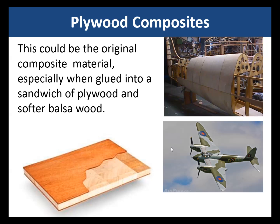Plywood composites. We include plywood in composite materials because it is the original composite material. Especially when glued, it's been used for airplanes — glued into a sandwich of plywood and softer balsa wood — and that was really one of the first composite materials.